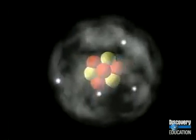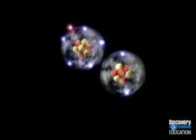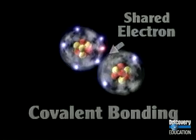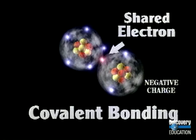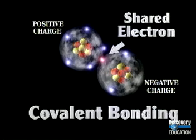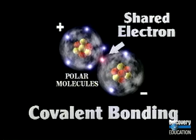The attraction atoms have for electrons varies. If two different types of elements combine to form a covalent bond, one element has a greater attraction for the shared electrons than the other, giving that atom a negative charge while the other has a positive charge. This slight variation in charges gives the atoms positively and negatively charged poles. Molecules that have poles are called polar molecules, comparable to the poles of a magnet or battery.